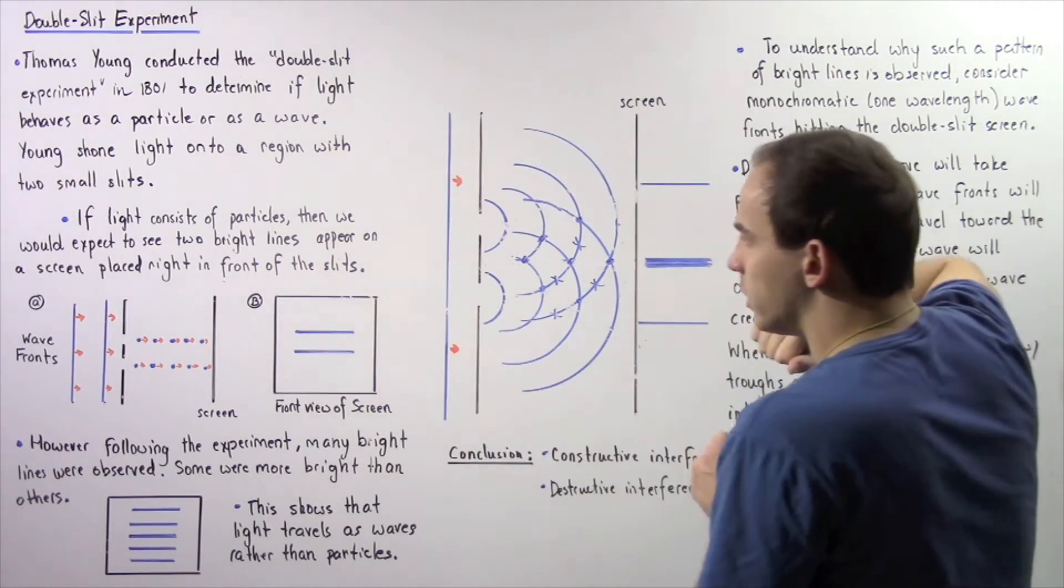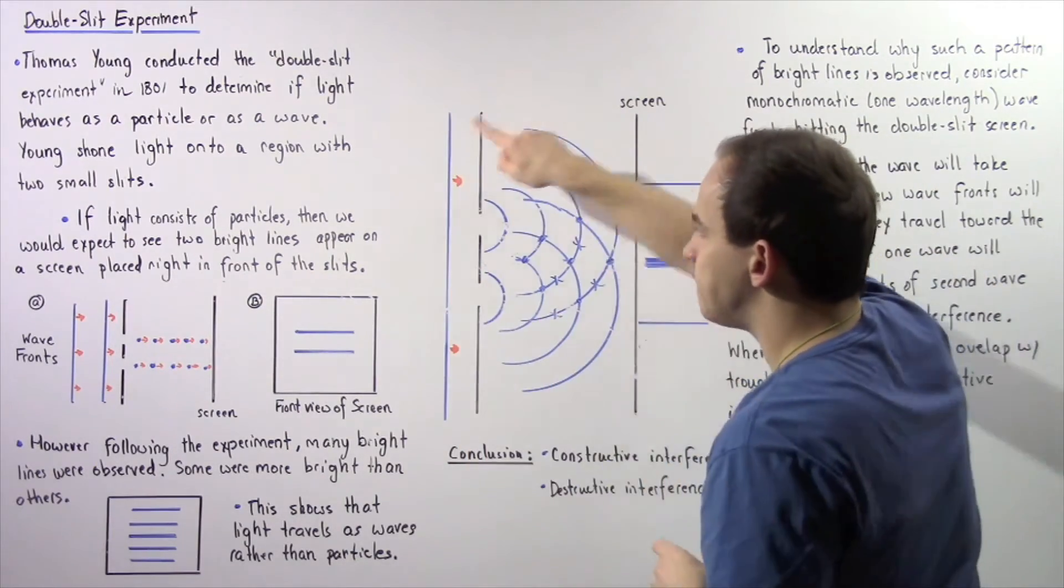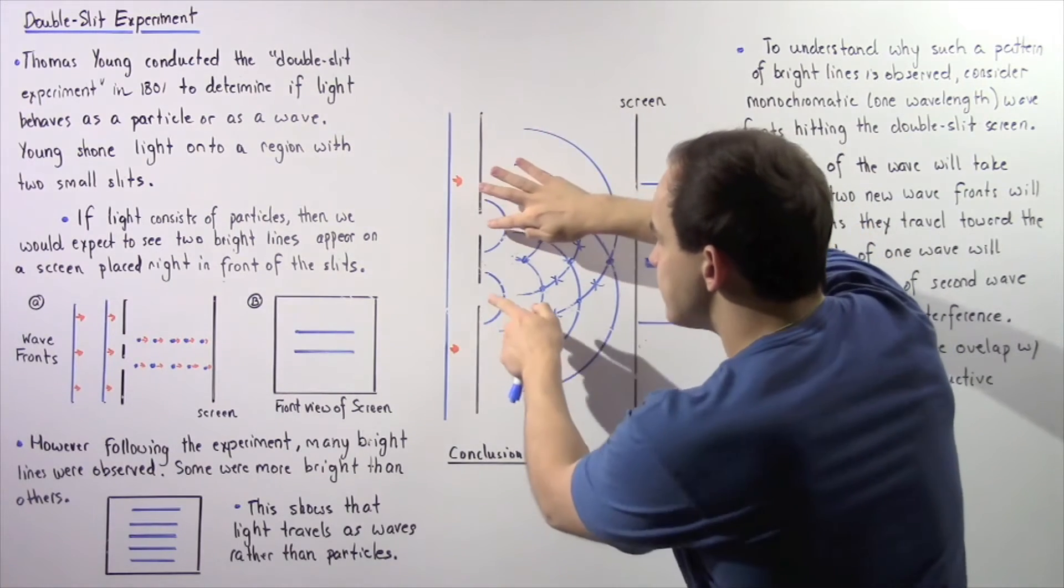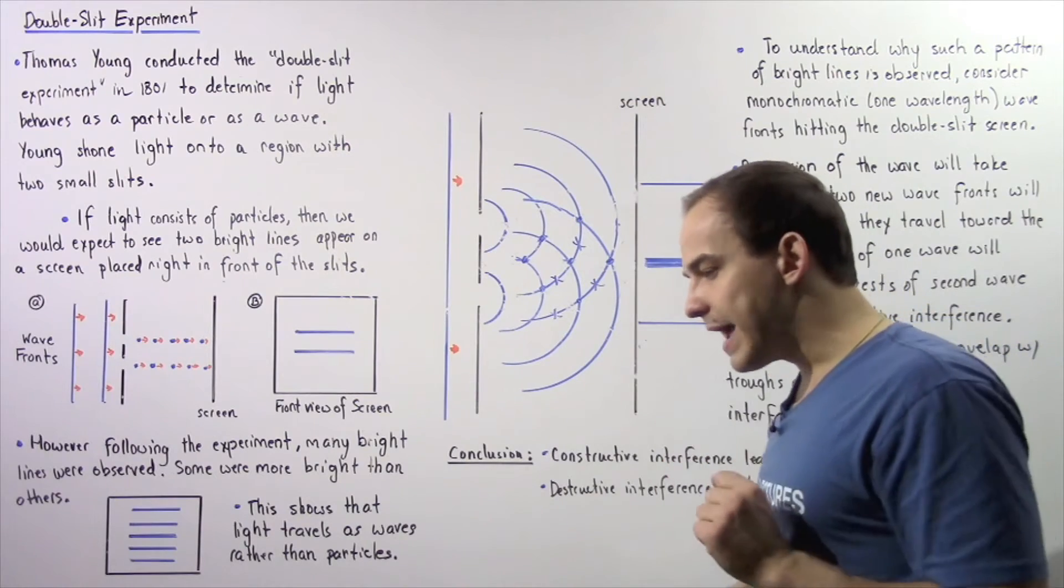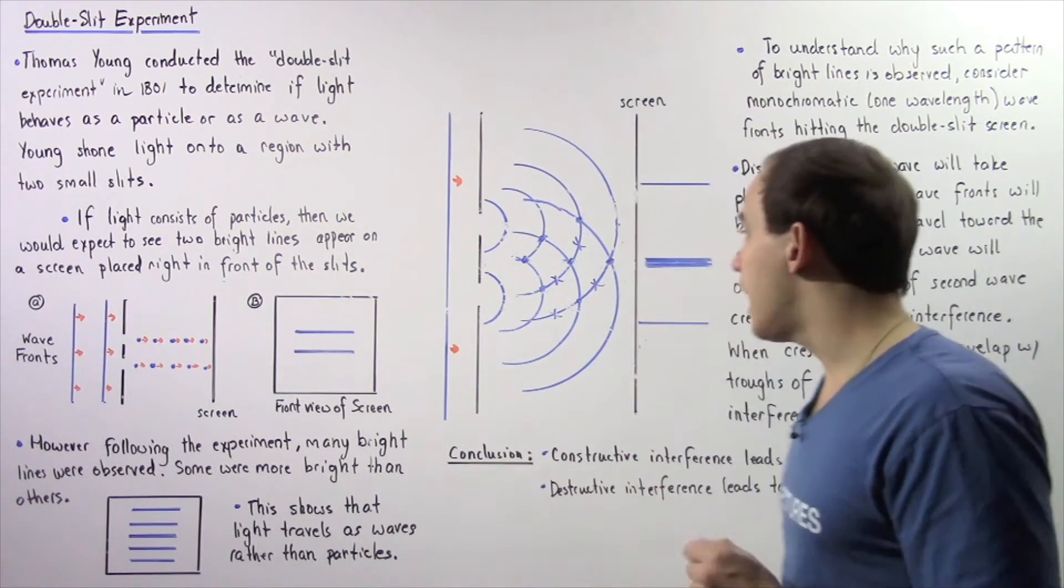Now what exactly will happen when it hits the following obstacle that essentially consists of two openings? Now from our lecture on dispersion of light,